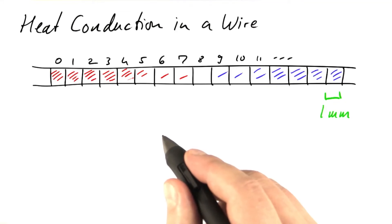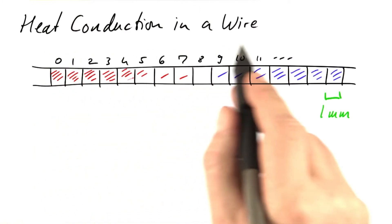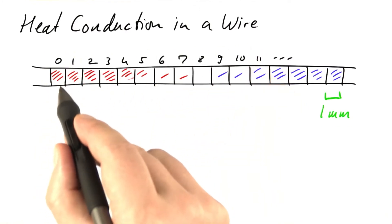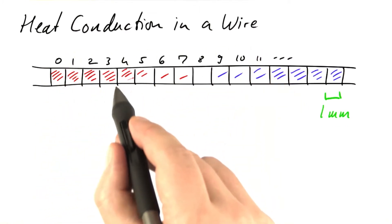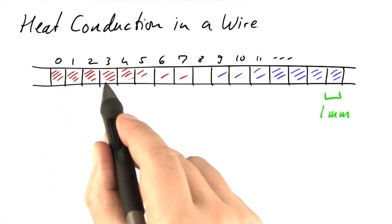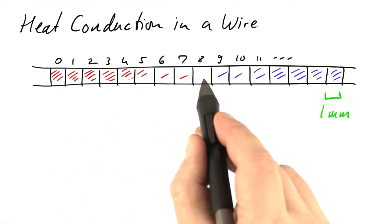And now we come to a model that has way more compartments than the one before. A model for heat conduction in a wire. Let's draw imaginary lines after each millimeter of that wire and treat each millimeter as one compartment.